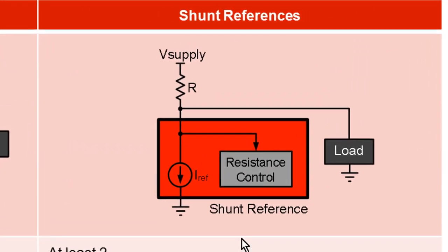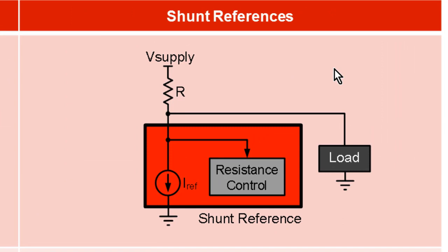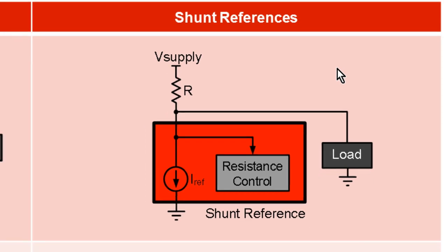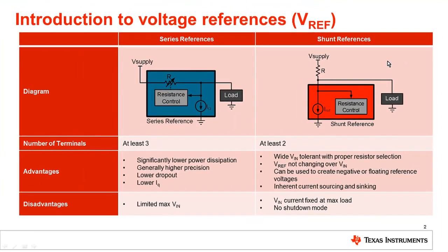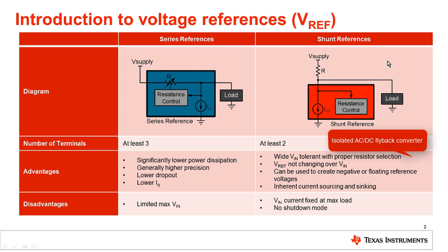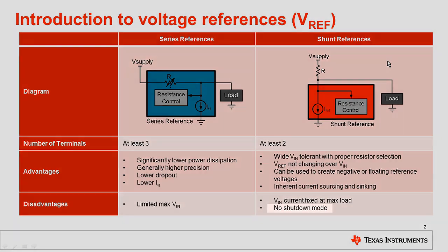Let's move over to the right. Shunt VRFs are used in similar fashion as Zener diodes, placed parallel to the load circuit, and have a very small current requirement in order to regulate the output. One main advantage of the shunt topology is the ability to sustain a steady reference voltage over wide input voltage ranges. Shunt VRFs in programmable architectures allow for a wide range of support for applications. The programmable feature makes the shunt VRF a useful component for isolated AC to DC flyback power converters, as they can feed back to the PWM controller through the isolation barrier.